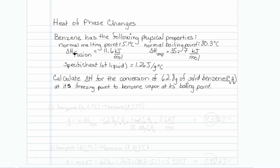Let's think about the steps involved in taking solid benzene to vapor phase benzene. We're going to start with benzene as a solid at its melting point, which is 5.1 degrees Celsius, and convert it to benzene as a liquid at 5.1 degrees Celsius. That's step one.